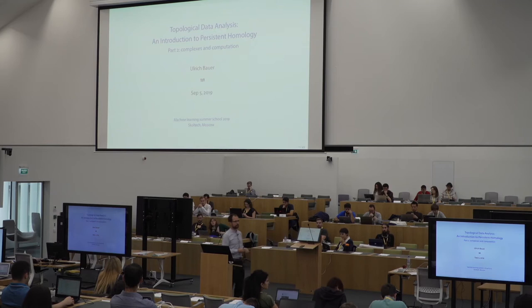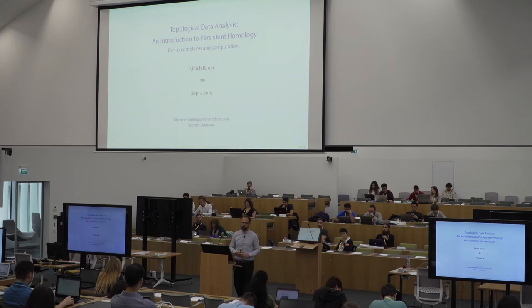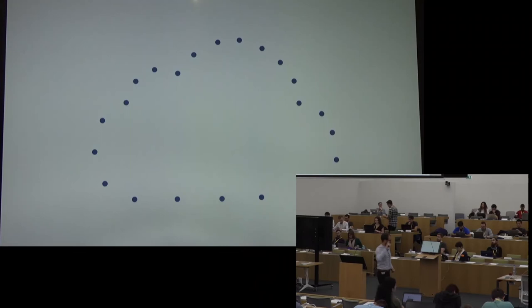The Rips complex has a big disadvantage: these complexes grow very large very quickly. I'm going to start today with another construction called Delaunay complexes. They are subcomplexes of the Delaunay triangulation, which you might have heard of before because they are commonly used in various fields — for example, in the finite elements method, where you need to triangulate a domain in which you solve a PDE.